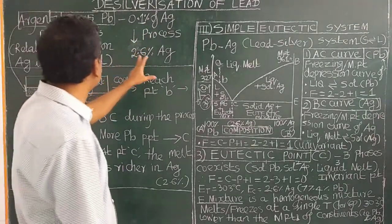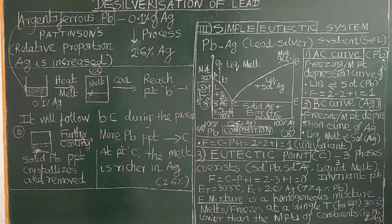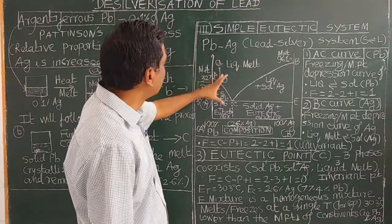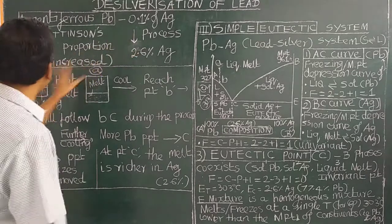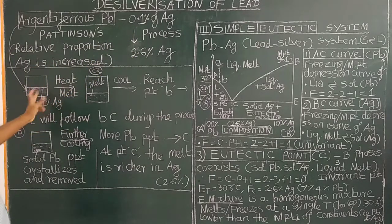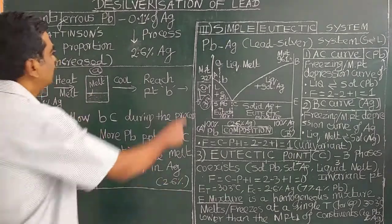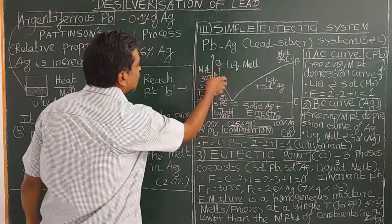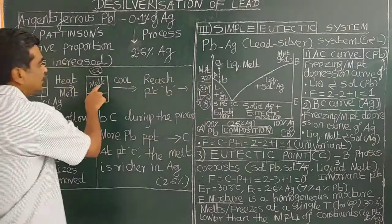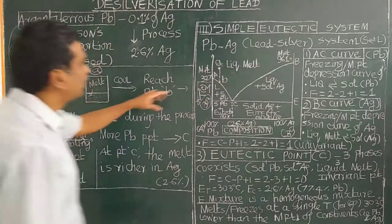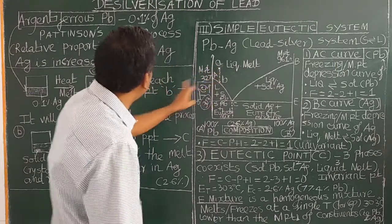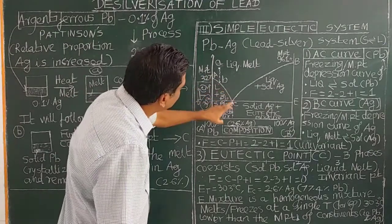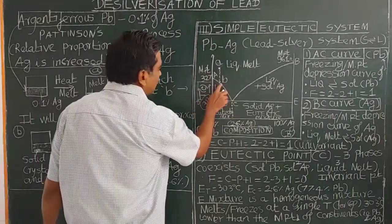The desilverization of lead is understood from the phase diagram. We take argentiferous lead with 0.1% silver in a container in solid state and heat it so that it melts. The 0.1% composition corresponds to point A on the phase diagram. On cooling, the temperature drops and reaches point B along the curve.